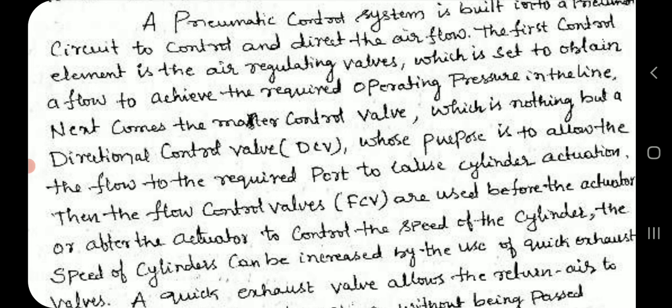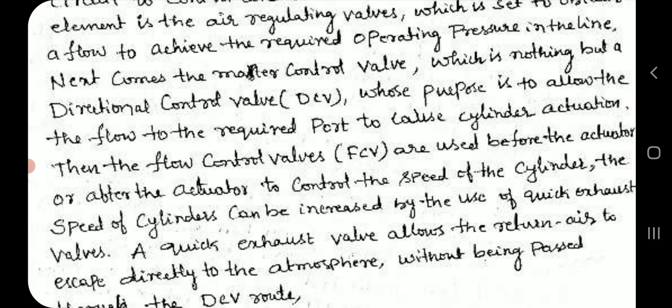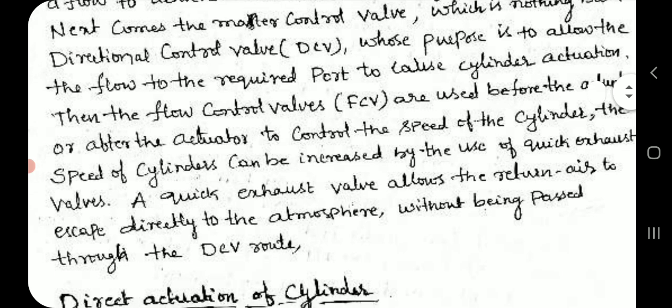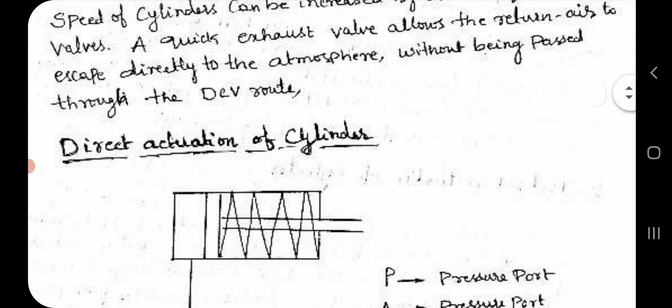Flow control valves are used before or after the actuator to control the speed of the cylinder. The speed of cylinders can be increased by the use of quick exhaust valves. A quick exhaust valve allows the return air to escape directly to the atmosphere without being passed through the directional control valve route.